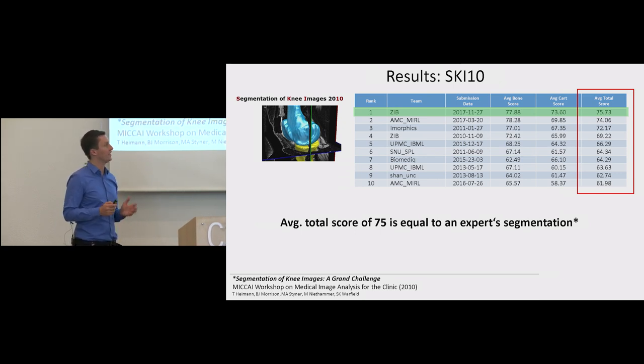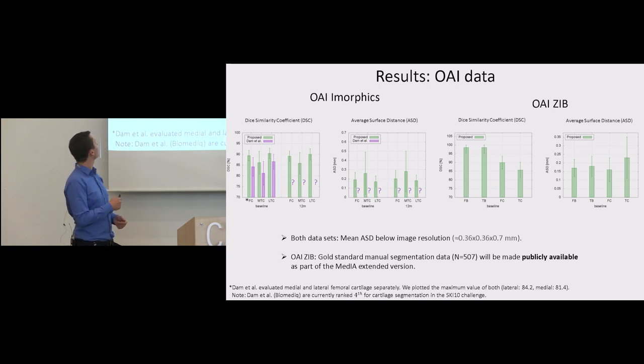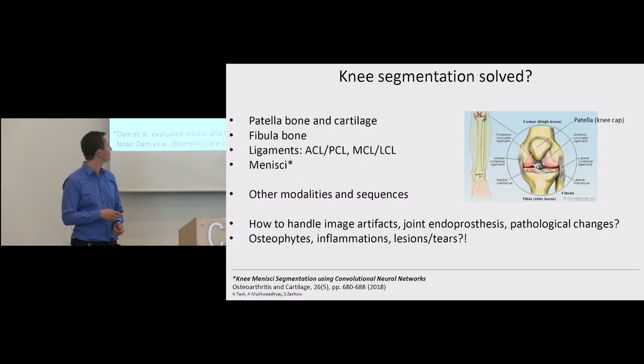For the SKI10 challenge data we achieved for the first time an average total score greater than 75. The score of 75 is equal to an expert segmentation as defined in the SKI10 setup. And for the OAI iMorphics data set we achieve results better than the results reported by Dumont et al for the zero time point. However, Dumont et al only reported the dissimilarity coefficient and only for one time point. We additionally evaluated different metrics, for example the average surface distance. And for both data sets, the OAI iMorphics and the OAI ZIB data set, our mean average surface distance is below image resolution. Also, we will make our manual segmentations of our OAI ZIB data sets, these 507 segmentations of bone and cartilage, publicly available as part of the Medical Image Analysis extended version such that new methods can compare their results to our results or even train on our data.